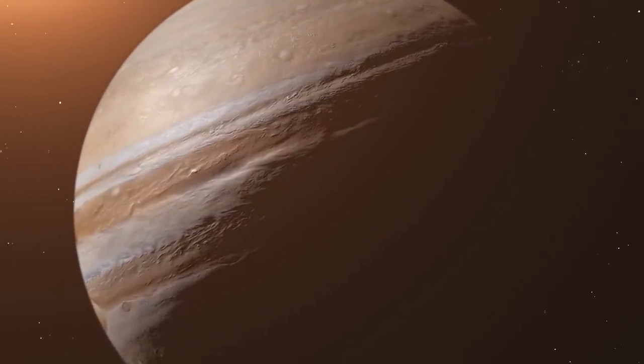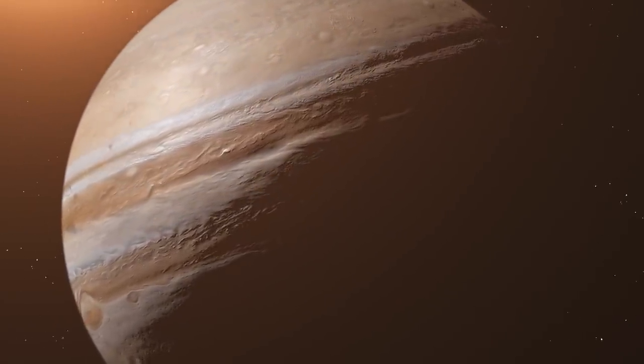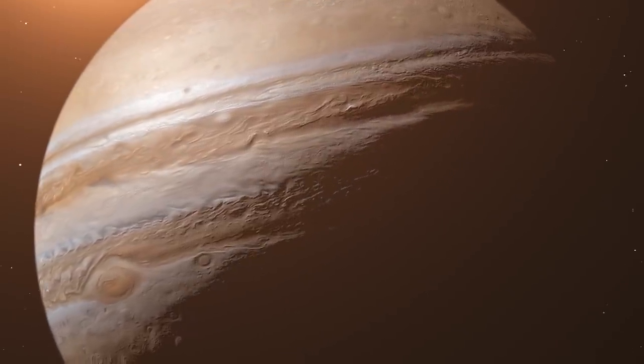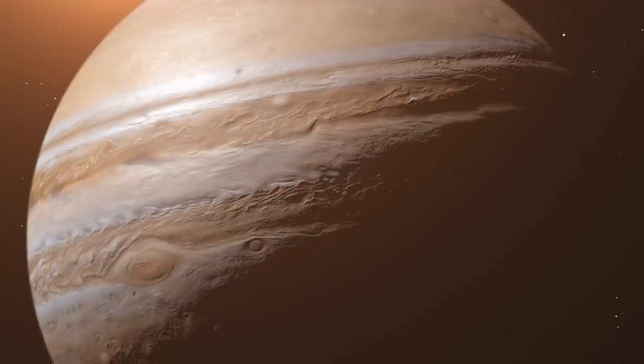Jupiter's rapid rotation, combined with its gaseous composition, generates an atmosphere recognizable by its alternating bands of color, depending on the latitude, shades of brown, and cream.